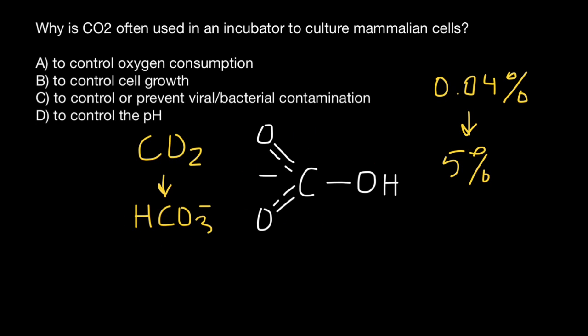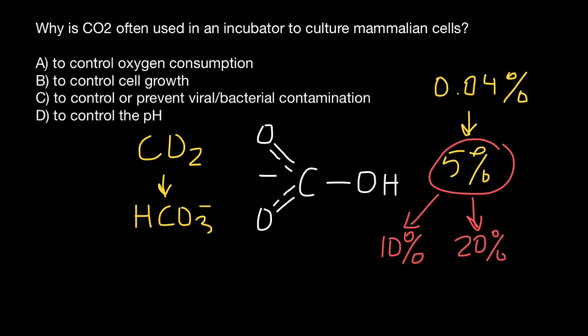Bicarbonate HCO3⁻ acts as a pH buffer to allow for gas, nutrient, and metabolite fluctuations without causing wild pH changes. So 5% of the carbon dioxide in our blood actually exists in three forms: about 10% of it is dissolved in plasma, about 20% of this 5% is carried on the hemoglobin bound to globins, and 70% exists as bicarbonate.